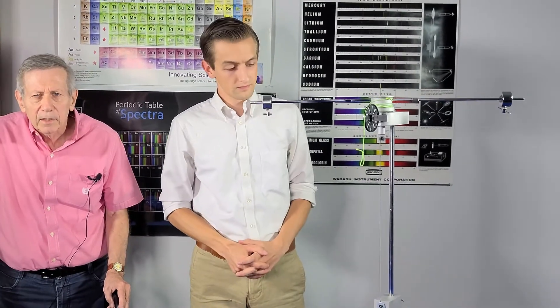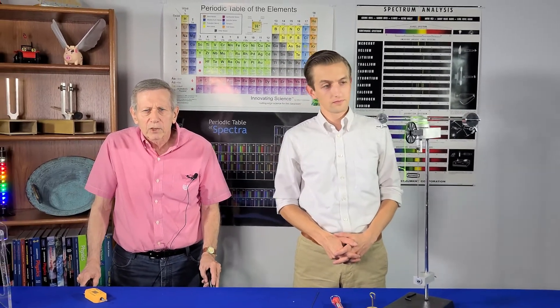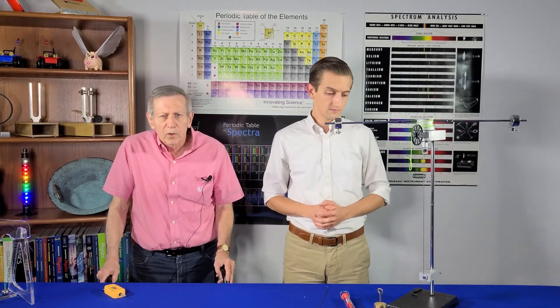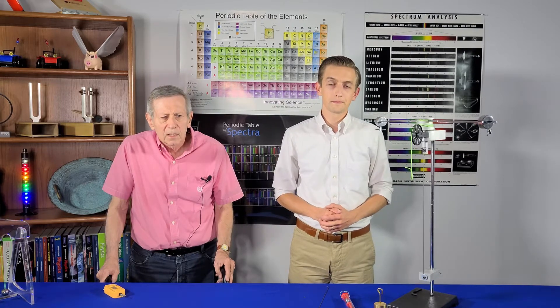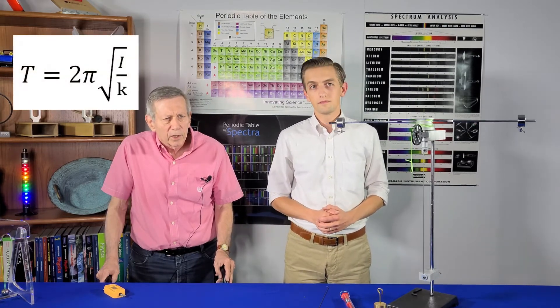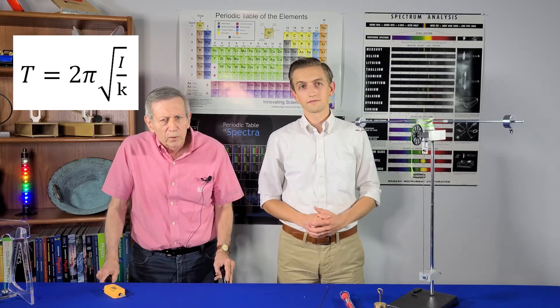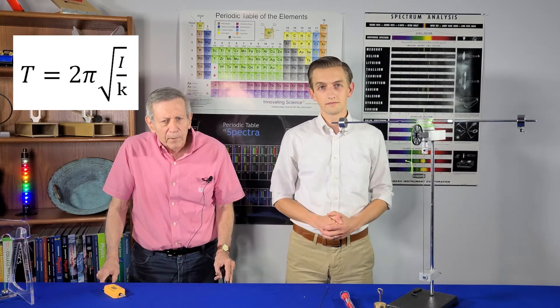Measuring these independently allows for a prediction of the pendulum's period and a confirmation of the pendulum equation. The equation for the period is the same for all harmonic devices. That equation says that the period is equal to two pi times the square root of I divided by kappa.